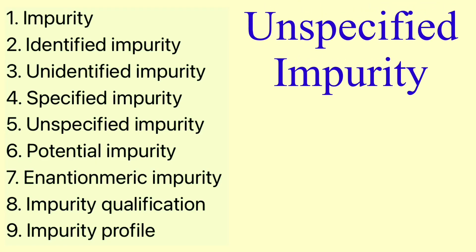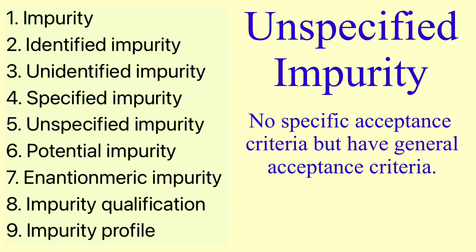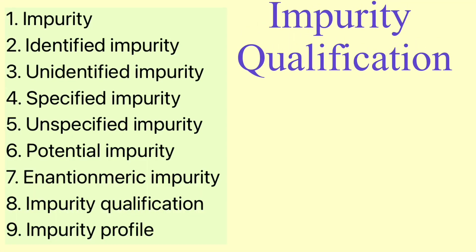Next is unspecified impurity, which is the opposite of specified impurity. While specified impurities have a specific acceptance criteria, unspecified impurities do not have a specific acceptance criteria — instead, they are governed by a general acceptance criteria. Those types of impurities are called unspecified impurities.